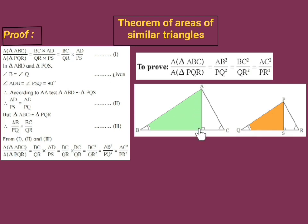Also, in these two triangles, angle ADB is congruent to angle PSQ, since AD is perpendicular to BC and PS is perpendicular to QR — which is our given. Now, in these two triangles, two pairs of corresponding angles are congruent. Hence, by the AA test, triangle ABD is similar to triangle PQS. Since these two triangles are similar, their corresponding sides are in proportion. Taking two ratios: AD upon PS equals AB upon PQ. This is statement number 2.